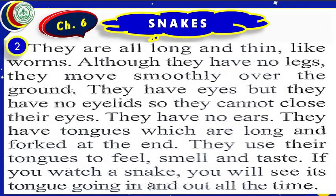They are all long and thin — these are the ways by which we can say they are similar. They like worms — this does not mean they like to eat worms; this means they are long and thin just like worms. Although they have no legs, they move smoothly over the ground.